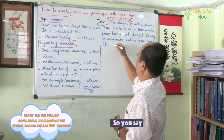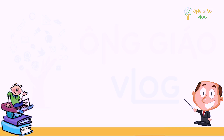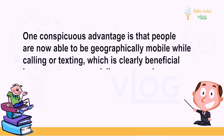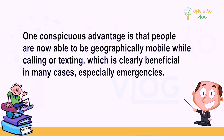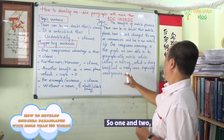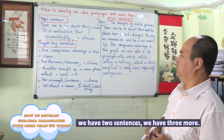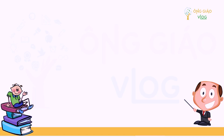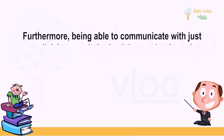Now the second sentence — that is the first supporting sentence: 'One conspicuous advantage is that people are now able to be geographically mobile while calling or texting, which is clearly beneficial in many cases, especially emergencies.' So we now have two sentences, with three more to go.